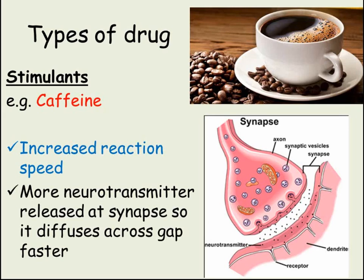Firstly, stimulants. As the name suggests, stimulants affect you by speeding up reactions. Remember that speeding up reactions means reducing reaction time, which is the time between a stimulus and your body responding to it. Caffeine is an example of a stimulant. Stimulants increase the speed of reaction by increasing the amount of neurotransmitter released at a synapse, making the neurotransmitter diffuse across the synapse faster, increasing the speed with which the message continues along the next neuron.